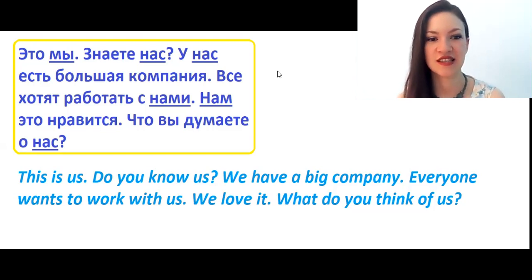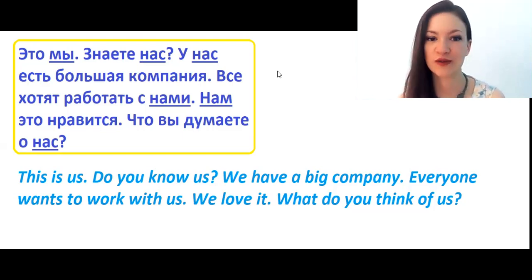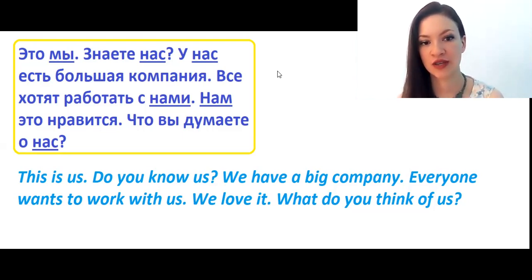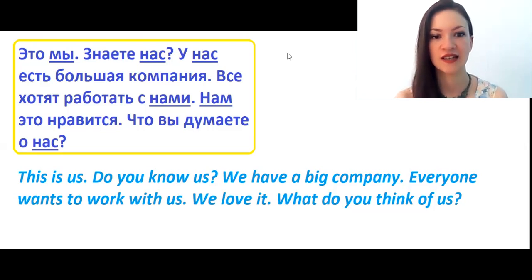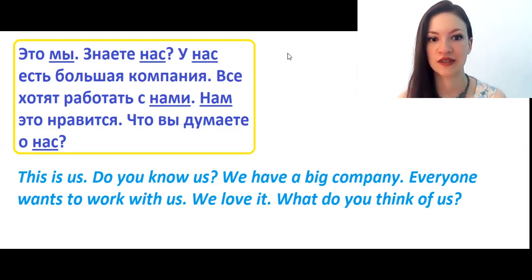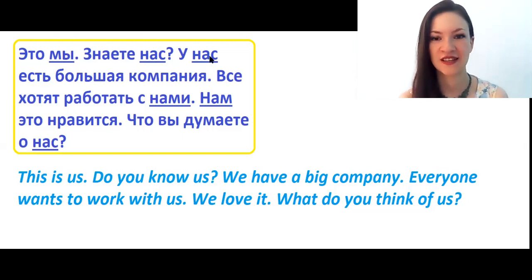У нас есть большая компания — this is a very interesting Russian construction meaning 'we have something.' After the preposition у, you always use genitive case. So нас here is genitive — and you see that нас looks the same in both accusative and genitive. They look the same but mean different things, so be very careful.